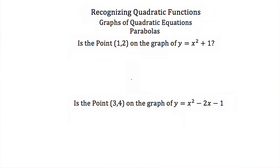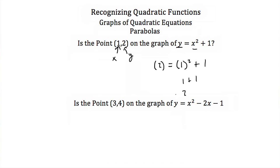Now that we know what a graph of a quadratic equation looks like, how do we know if a point belongs on the graph of a certain quadratic equation? For example, is the point (1, 2) on the graph of y is equal to x squared plus 1? All you do is plug in 1 for x and 2 for y and see if your equation makes sense. Our y is 2, and this equals 1 squared plus 1. Now 1 squared is 1, plus 1 is 2, so we have 2 is equal to 2. That makes sense, so yes, this point does lie on the graph of y is equal to x squared plus 1.